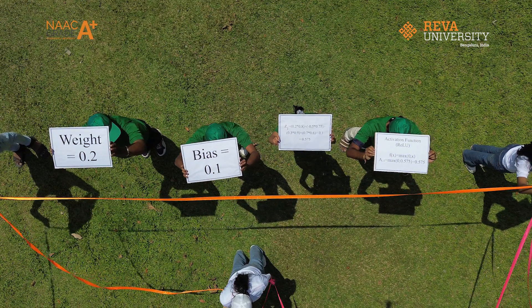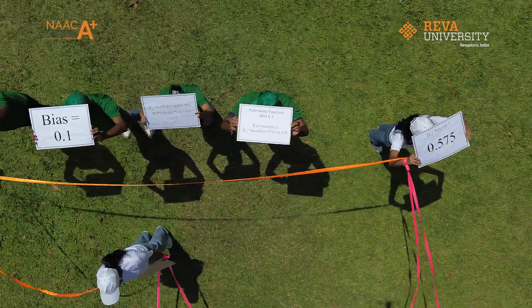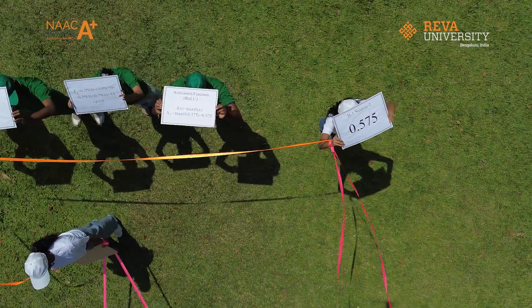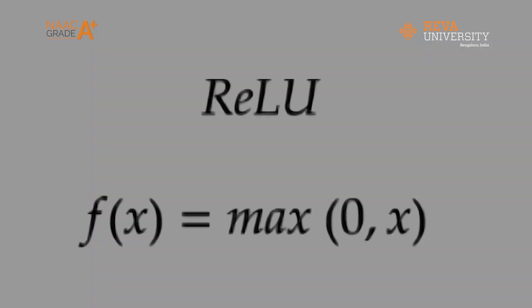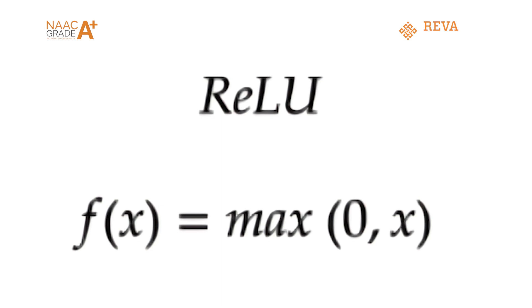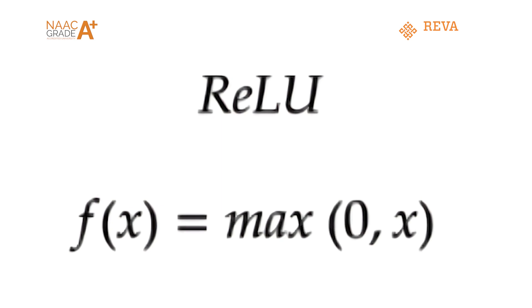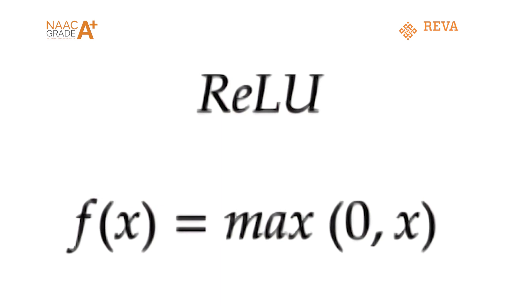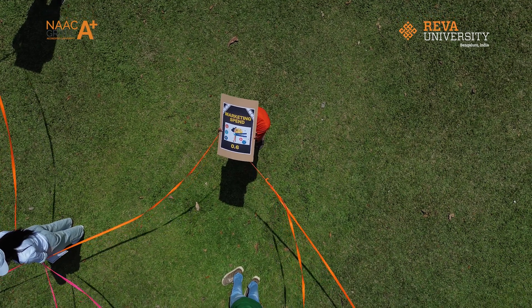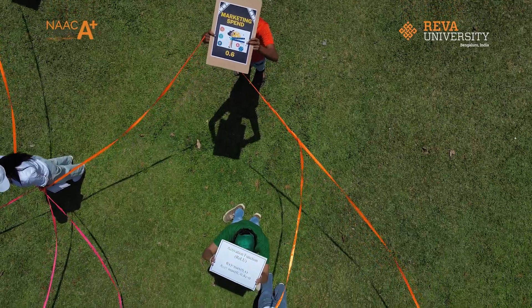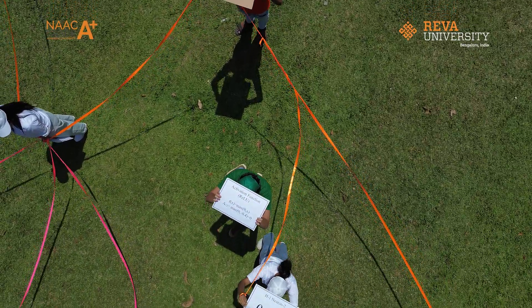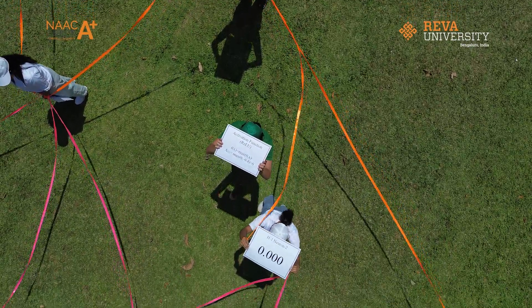Now that we have the weighted sum, we need a way to decide which values should move forward. This is where the activation function steps in. Think of it like a strict bouncer at a club — if the value is negative, it gets blocked, and only positive values move forward. This helps the neural network focus on the most important patterns.